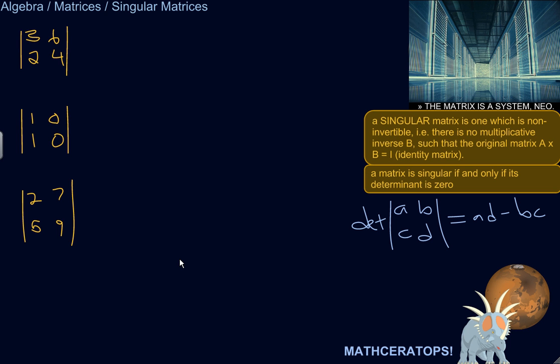So a singular matrix is non-invertible. And a shortcut to determine whether a matrix is singular is to calculate its determinant. And if the determinant is zero, then the matrix is singular.